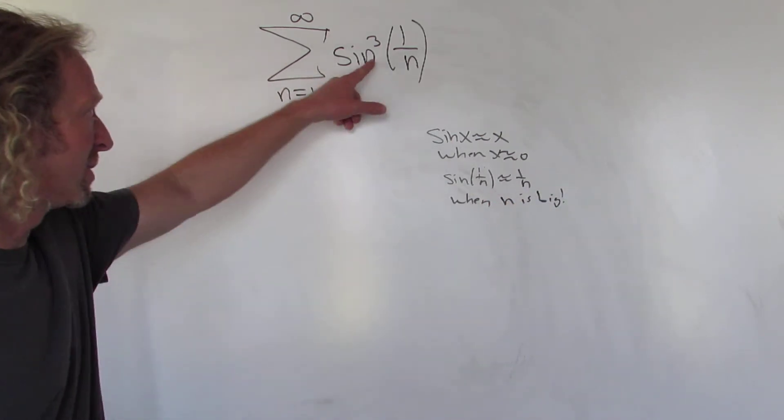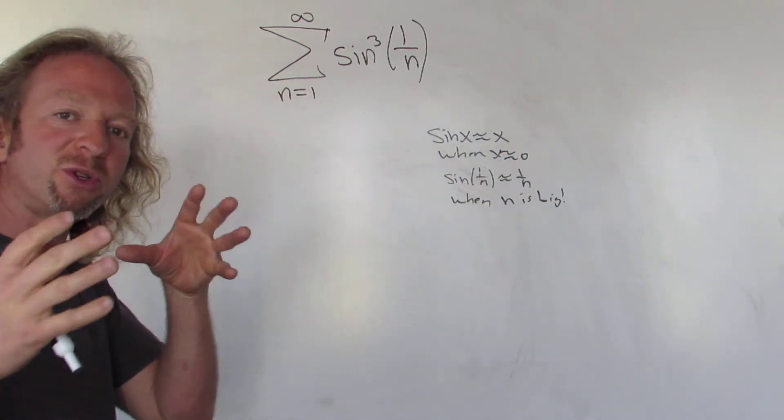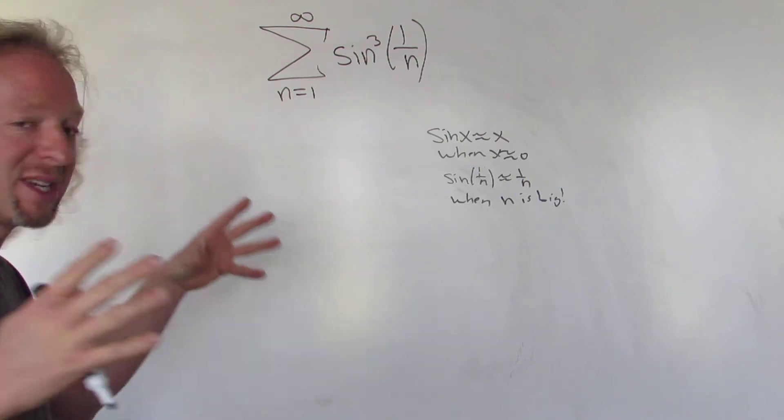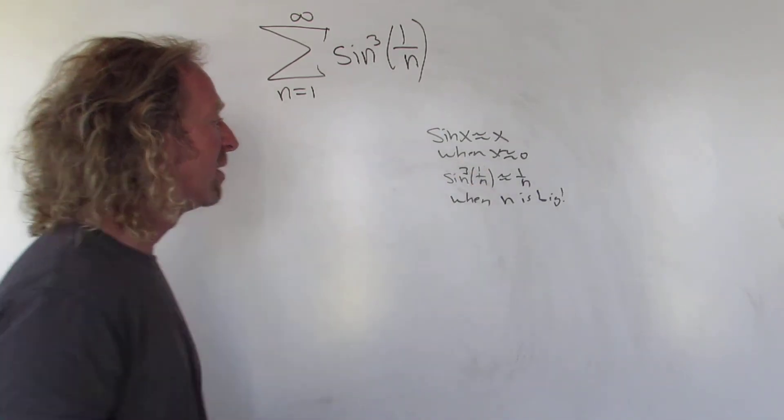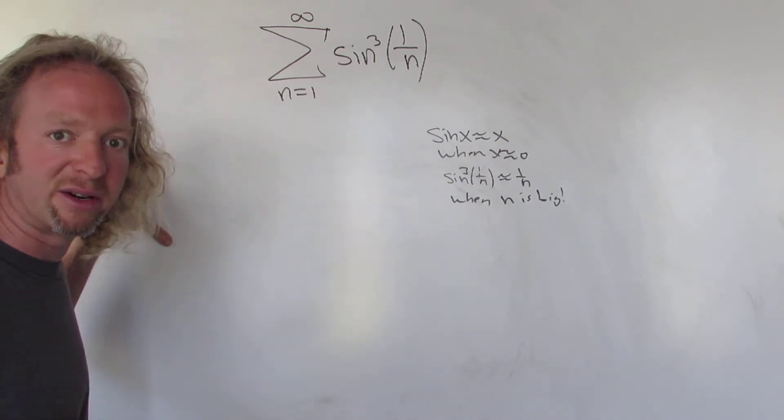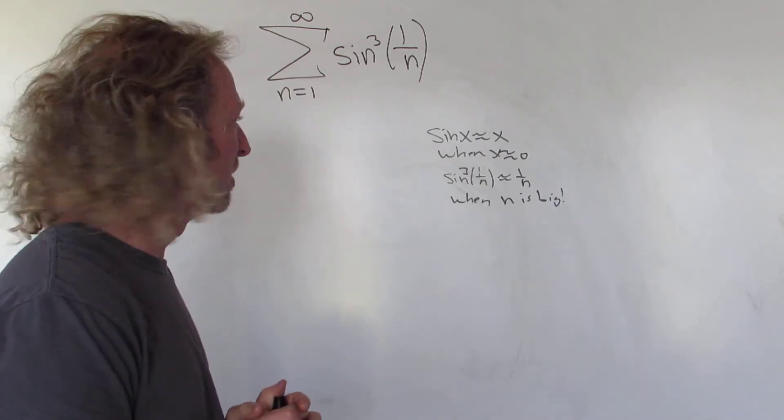So the cube is not really going to affect anything. It'll just make it even closer to 0 because when you have a number between 0 and 1 and it's being cubed, it makes it even smaller. So it'll also apply if you have it cubed here. So we're going to use limit comparison because these both seem to behave the same when n is big.